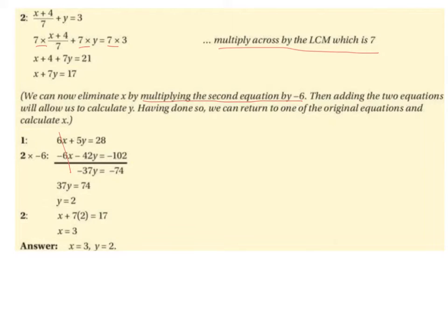We can change the signs across to get positive 37y equals 74. Dividing 74 by 37 gives 2, so y equals 2. Alternatively, minus 74 divided by minus 37 also gives 2, so either way y equals 2.